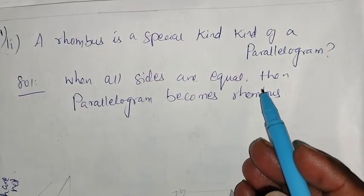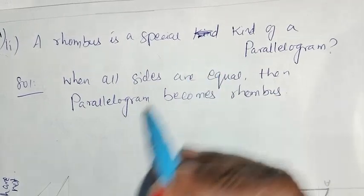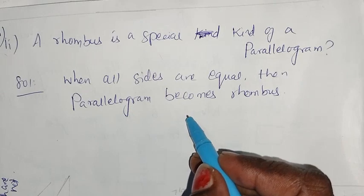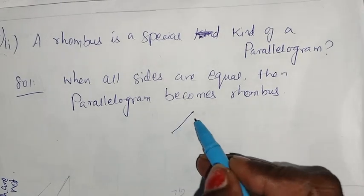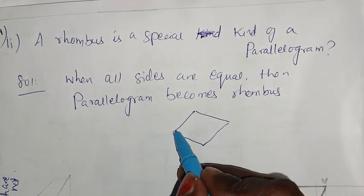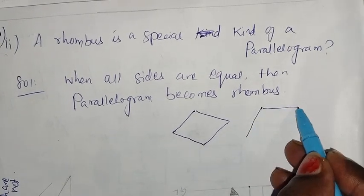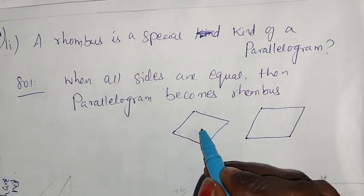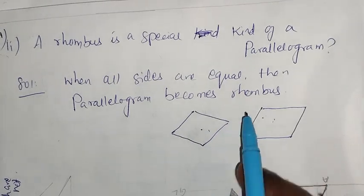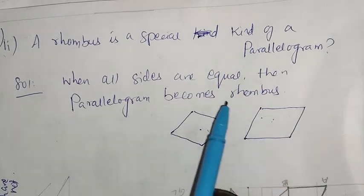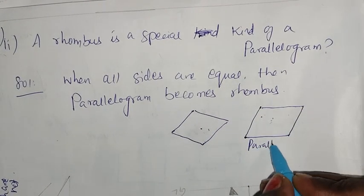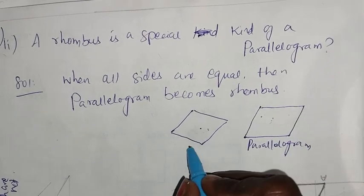A rhombus is a special kind of parallelogram. A rhombus is a special kind of parallelogram. When all sides are equal, the parallelogram becomes a rhombus. This is a parallelogram; this is a rhombus.